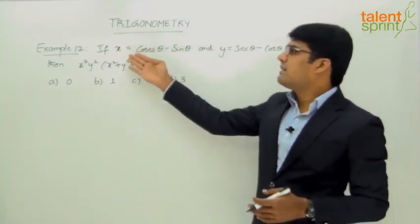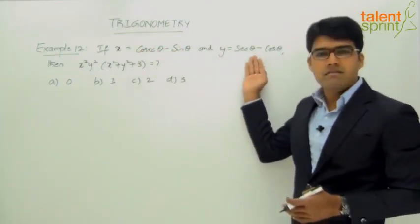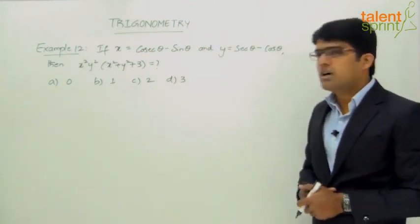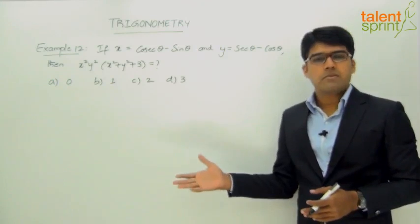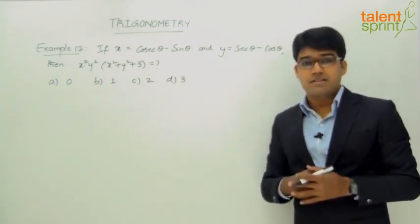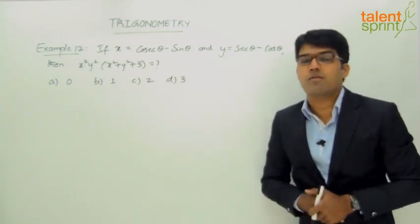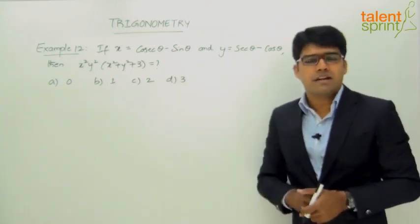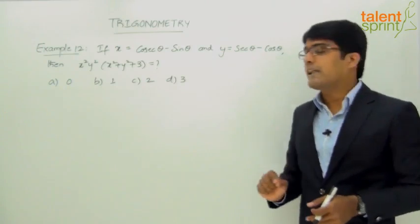There are just two equations given involving the angle theta. So what do we do - the regular procedure or the smart method? Since we've already learned the smart way of answering these questions, let's not waste time on the traditional method. Just assume some value for theta.